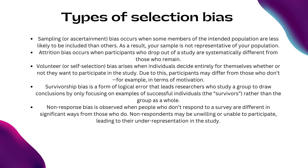Selection bias is a general term describing errors arising from factors related to the population being studied, but there are several types of selection bias. Sampling, or ascertainment, bias occurs when some members of the intended population are less likely to be included than others. As a result, your sample is not representative of your population.